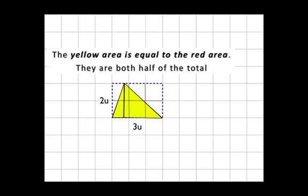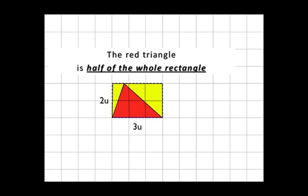So we see that the yellow area is exactly equal to the red area. They're both exactly half of the total rectangle. Let's put them back. You see? The red is half and the yellow is half of the area. So the total area is 6. Half of it must be 3.